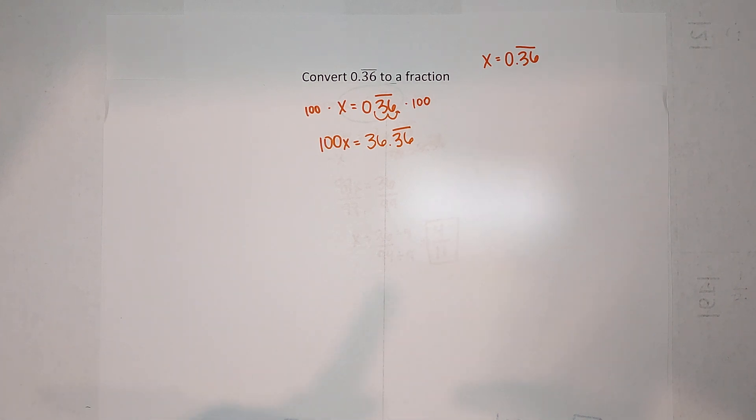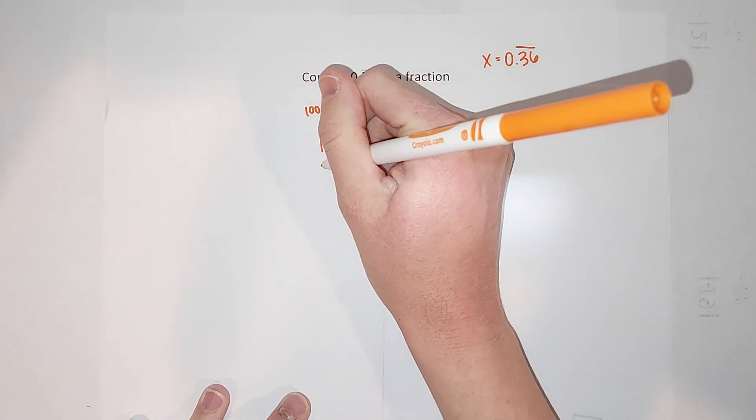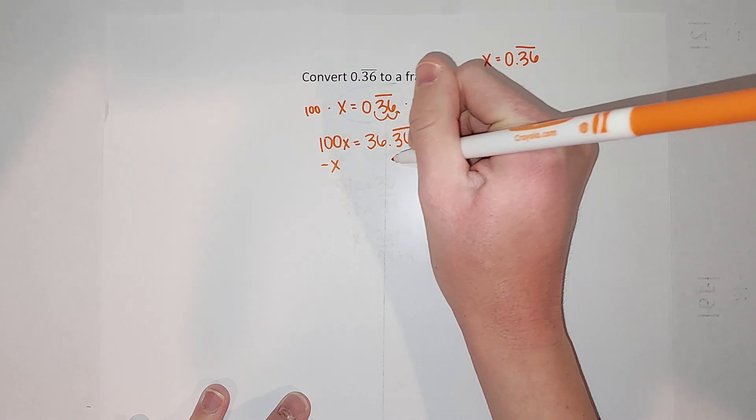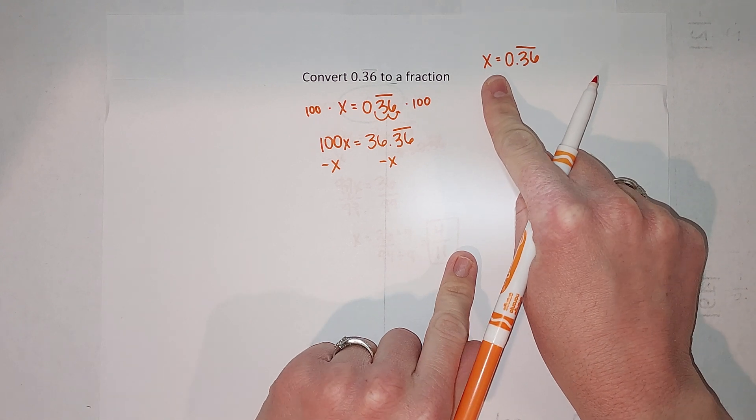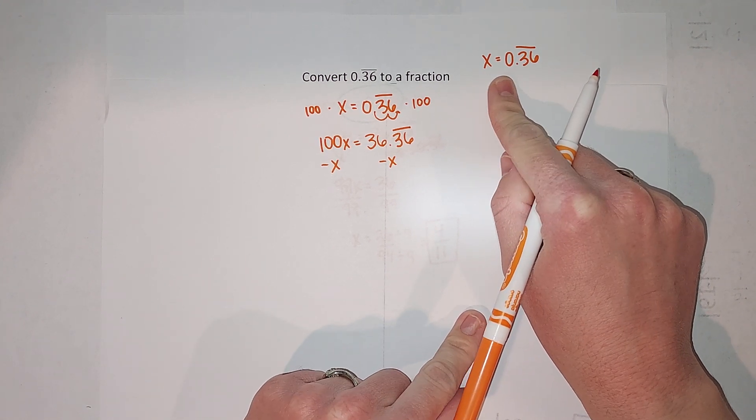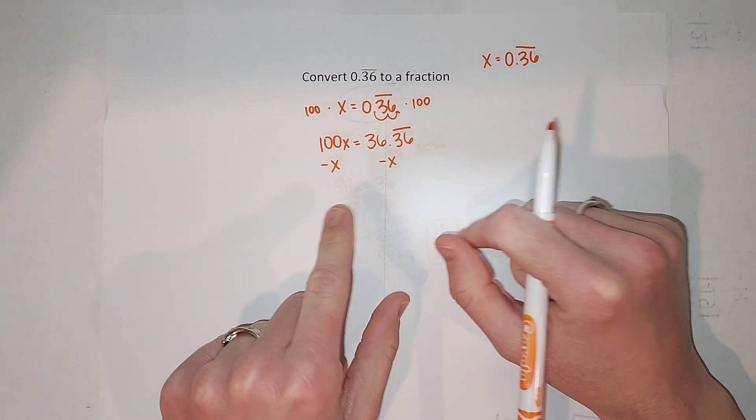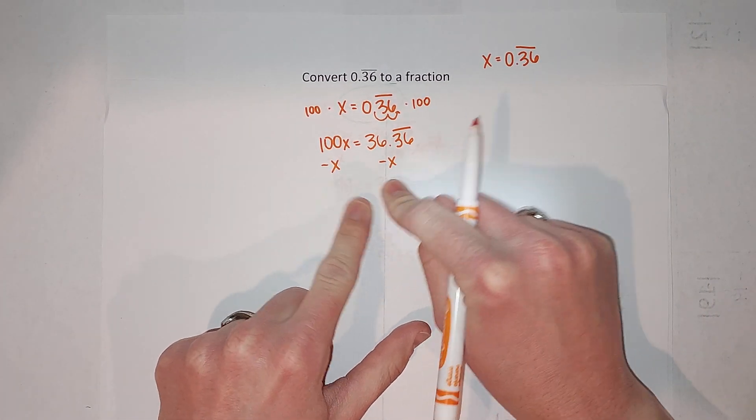So I'm subtracting x from this side and from this side. But remember from the very beginning what did we say x is? x is equal to 0.36 repeating. So I'm going to write it as x on this side, I'm going to write it as 0.36 repeating on this side because those are the same.